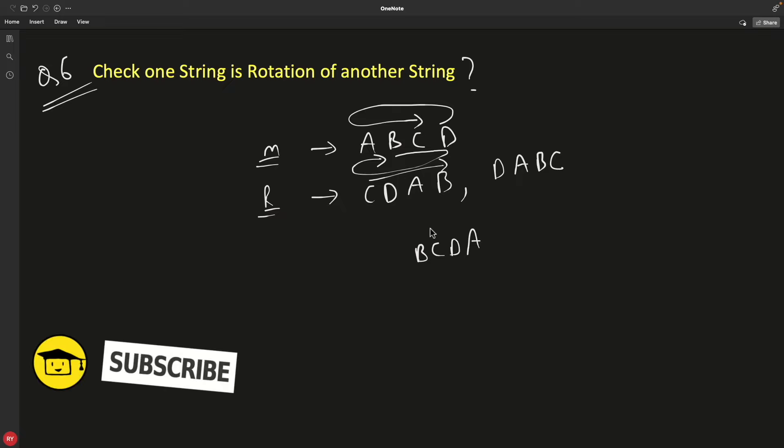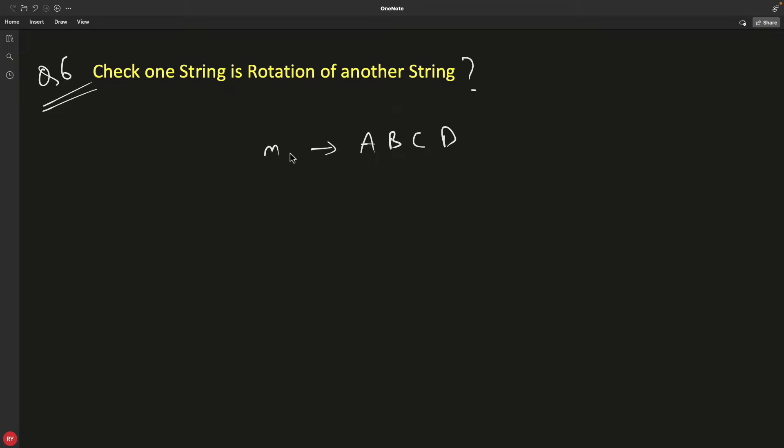Let's see how we will solve this. And you will be surprised to see that the solution is so simple. Let me clear this. What you have to do is, this is your main string, right? What you have to do, you have to create a concatenated string which is going to be M, which is main plus main.